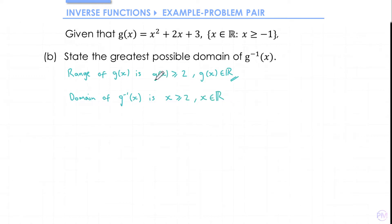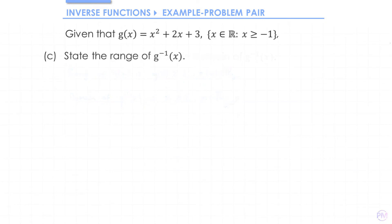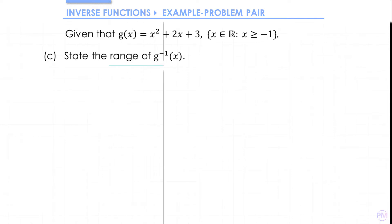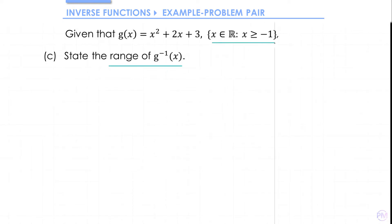Notice that in the original function for the range I had g(x), but when I write a domain I just have x. In part c we need to state the range of the inverse function. This one's nice and straightforward because the range of the inverse function contains the same values as the domain of the original function.